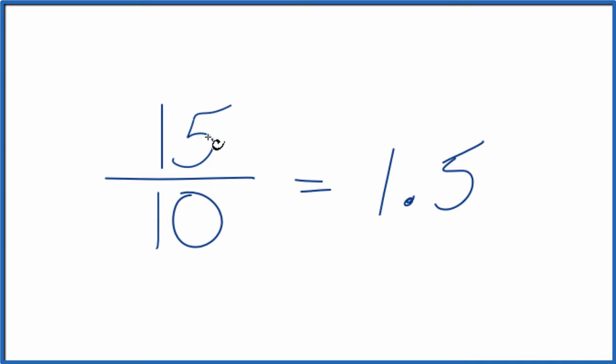The other thing is you could recognize that you have 15 over 10, and you could just move the decimal place here over one place to the left. That gives us one. You need to do that up top too. That gives us 1.5 over 1, which is 1.5.